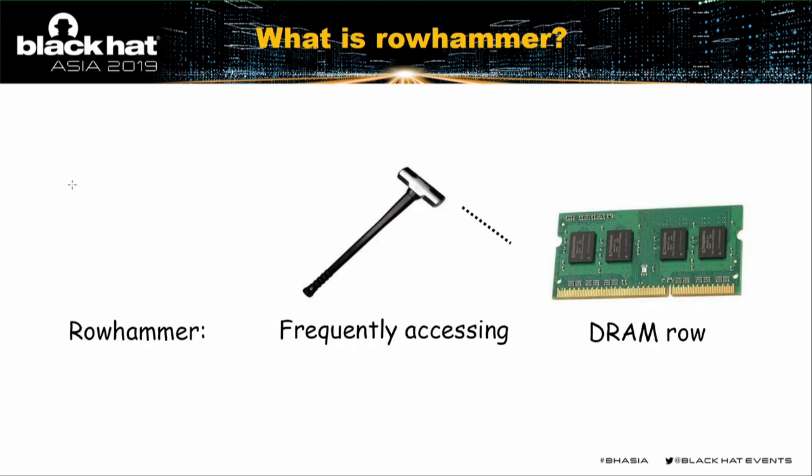So what is Rowhammer? Literally speaking, hammering a row means to frequently access a row. Because the density of DRAM cells in DRAM modules can increase significantly, these cells can electrically interact with each other. So by frequently accessing a row, you can cause electrical charge disturbance in its adjacent rows.